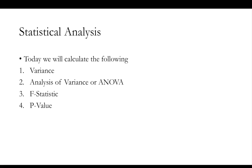So what are we going to look at today? We're going to calculate some more statistics. We're going to look at variance — last video I talked about coefficients of variance, but we're actually going to delete that and look at variance. Then we're going to look at analysis of variance, or ANOVA. The ANOVA will give us an F statistic and a p-value, which are key to allowing us to reject or fail to reject our null hypotheses.